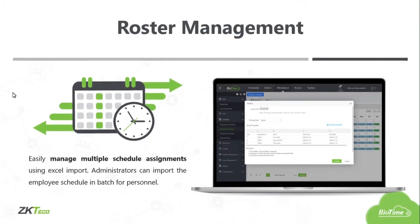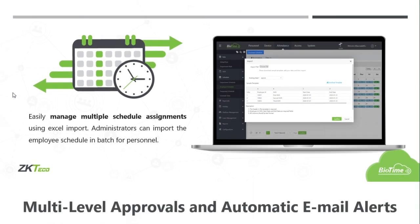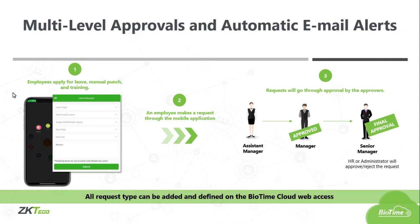Next is roster management. You can easily manage multiple schedule assignments using Excel import. Administrators can import the employee schedule in batch for personnel, so it's going to be easier for you. Next is multi-level approvals and automatic email alerts. When employees apply for leave, manual punch, and training, it will go through a series of approvals. All request types can be added and defined on the Biotime Cloud web access — it can be a two-level or just one-person approval. It depends on you.